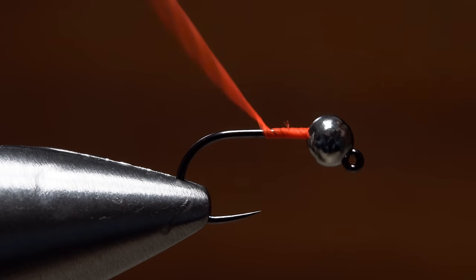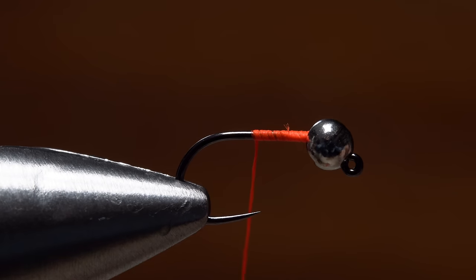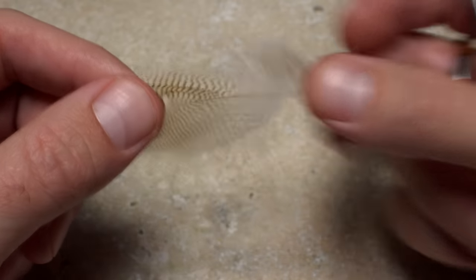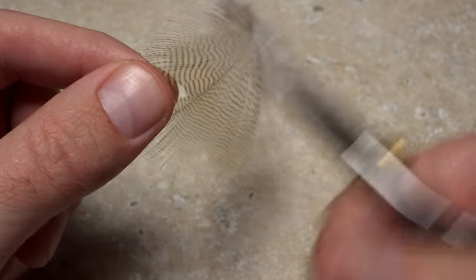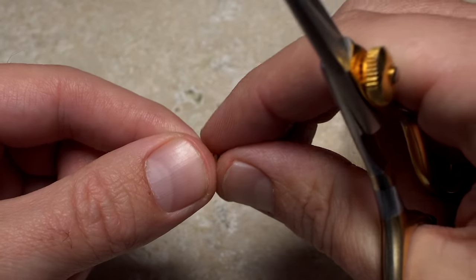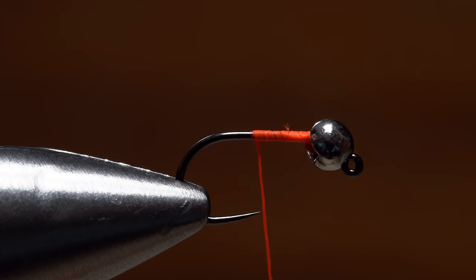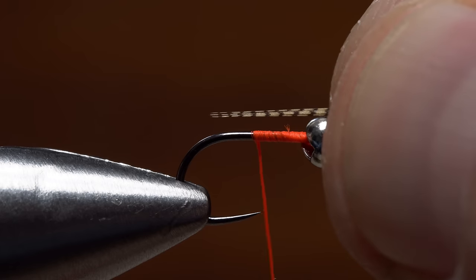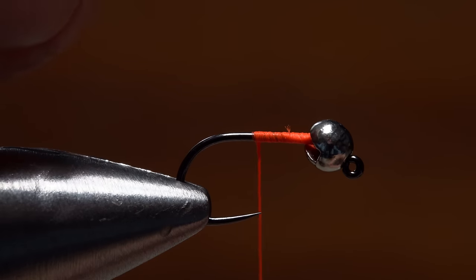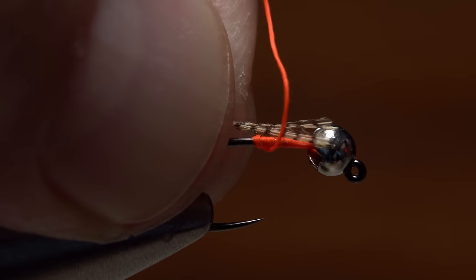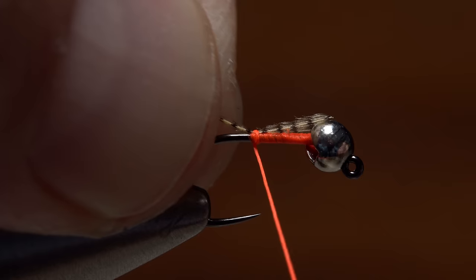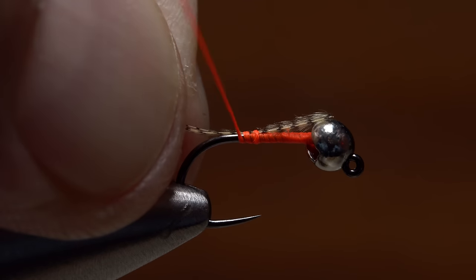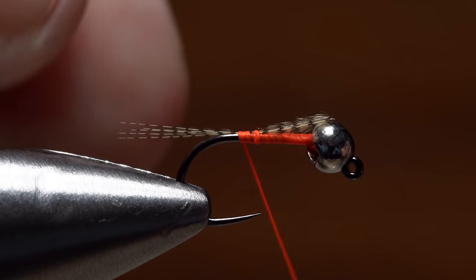Continue taking touching wraps back to about the hook point. 8 to 10 wood duck fibers are used for the tail of the fly. While keeping their tips aligned, snip them free from the feather, then measure to form a tail about a hook shank in length. Then transfer that measurement to the start of the hook bend. Secure the wood duck to the top of the shank with wraps of tying thread again to the start of the bend.